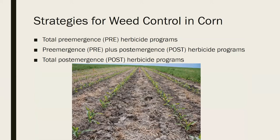Now we'll move into more of the applied stuff and talk about some of the overall strategies for weed control in corn. There are really three ways we can approach this. Sometimes people do a total pre-emergence only program — you lay something down at planting or shortly thereafter and that's it. Another option is a total post-emergent program where we don't do anything at planting or early in the season, we just spray when the crop has some size. And then there's a combination of pre plus a post-emergent treatment.